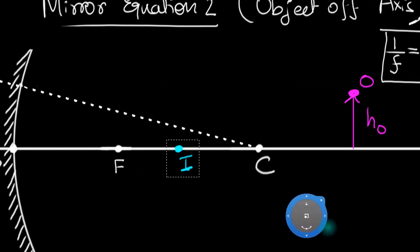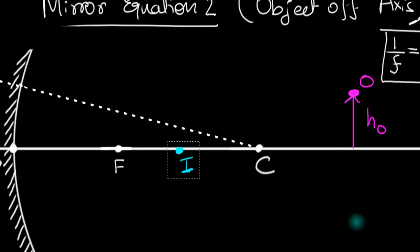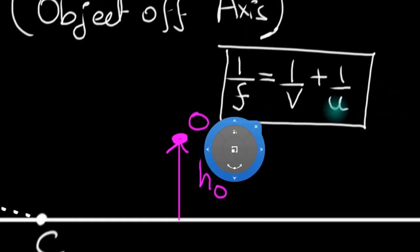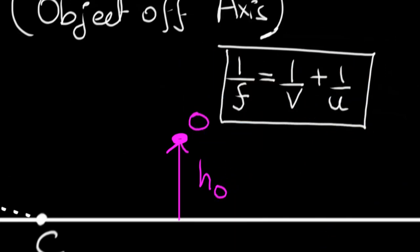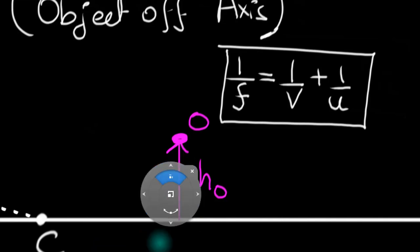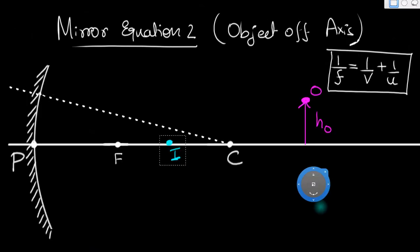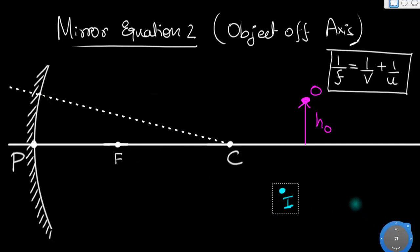So the good news is this formula still works. It works for distances along the principal axis, and that's why we derived it last time by keeping the object on the principal axis. So this time, we're just going to find out what's going to happen perpendicular to the principal axis. Let's keep this guy somewhere at the side for a moment, and then we're going to reintroduce him back later.